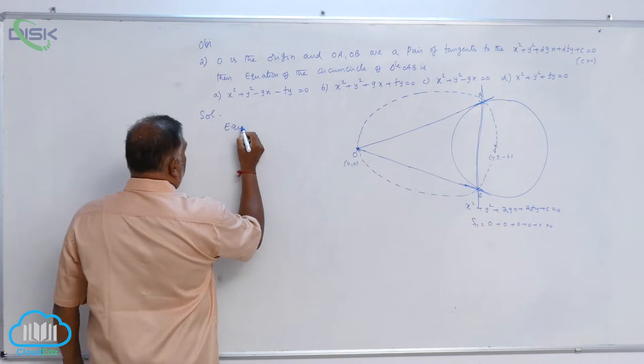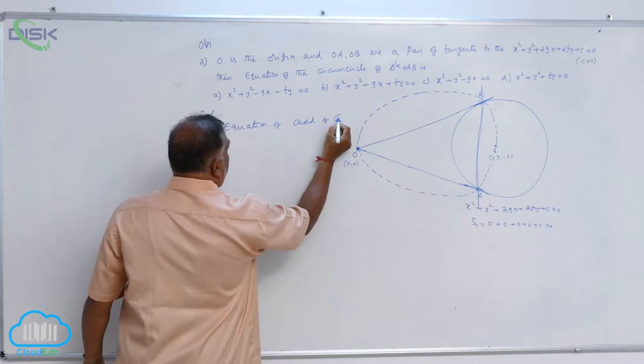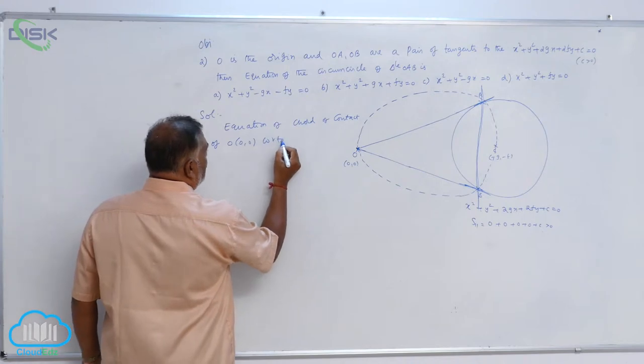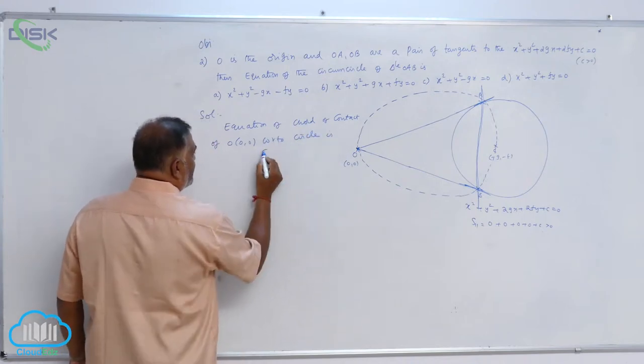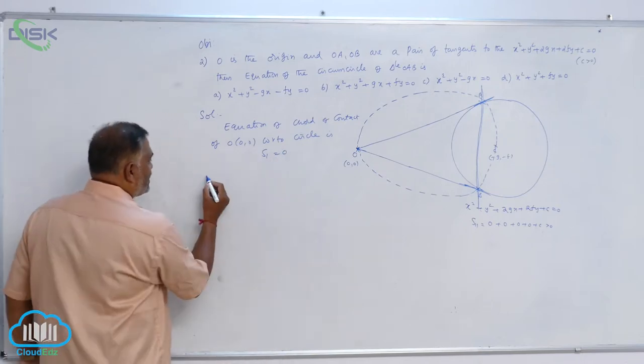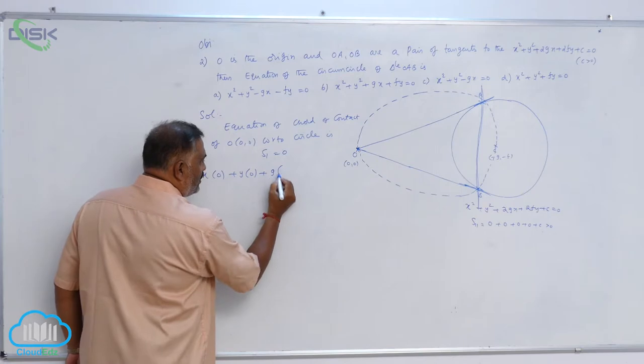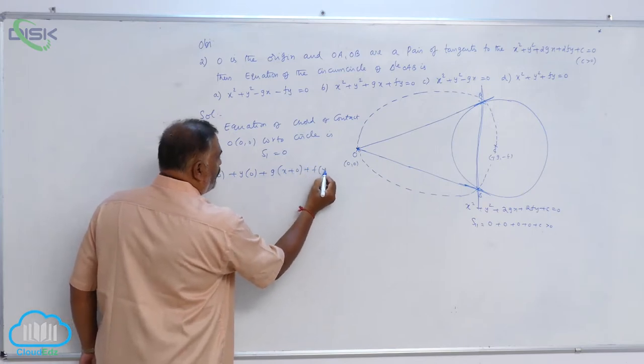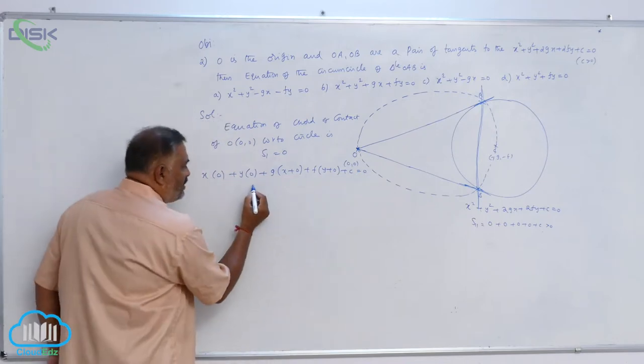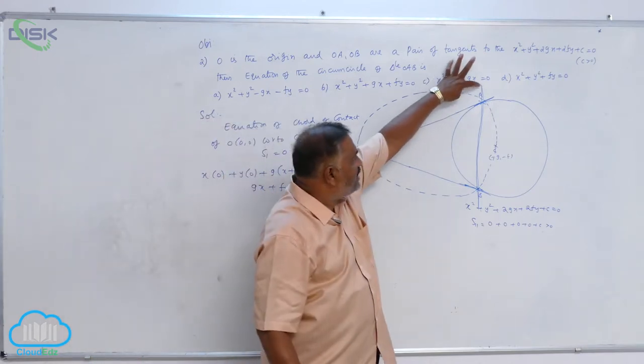So, equation of chord of contact of O(0,0) with respect to circle is S₁ is equal to 0. I think all of you know how to write S₁. X into 0 plus Y into 0 plus 2G, it is G into X plus 0, F into Y plus 0 plus C is equal to 0. Now, simplification, GX plus Fy plus C is equal to 0. Now, this is the equation of AB line.